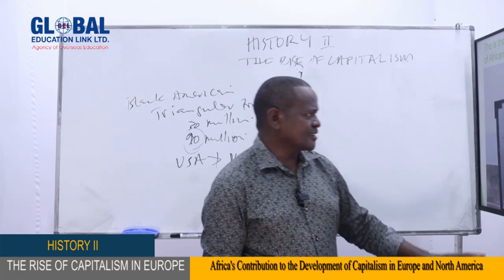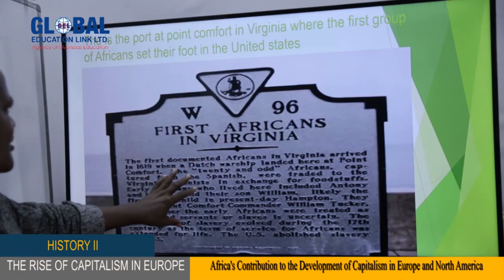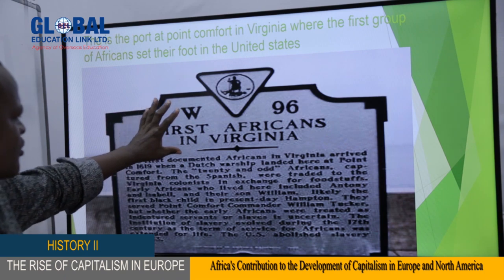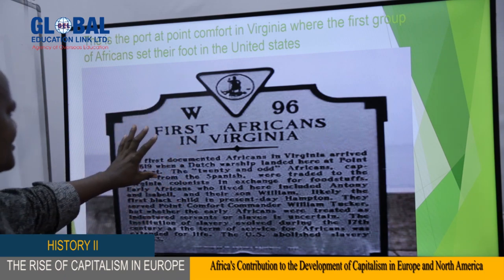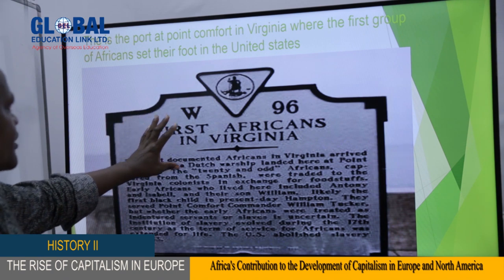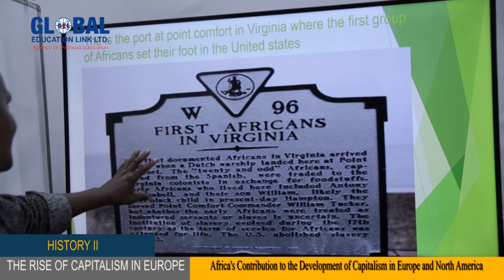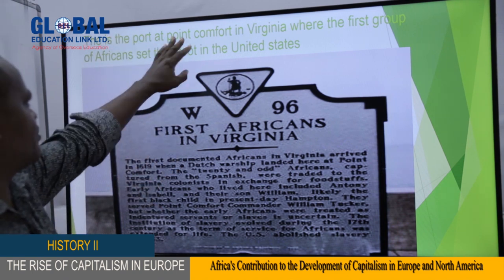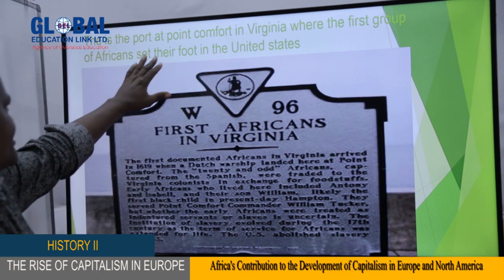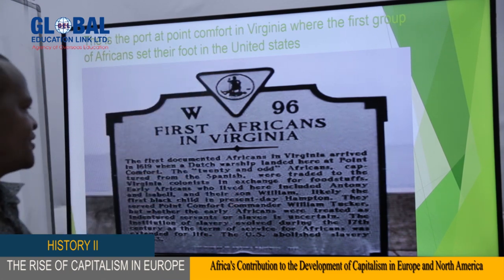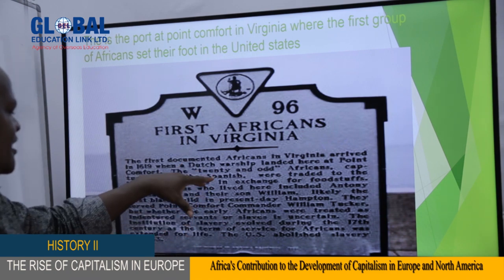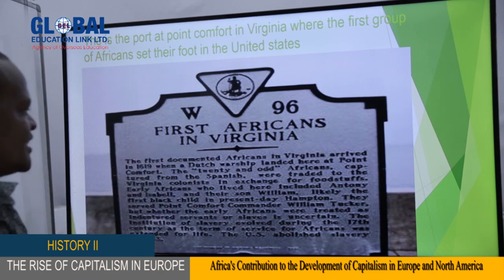This is the place where the first group of black people were brought as slaves — the port at Point Comfort in Virginia where the first group of Africans set their foot in America as slaves. If you go to that place today, you are going to see it as shown here.